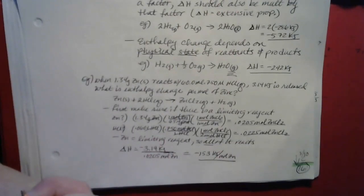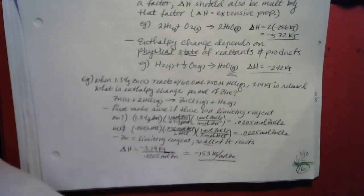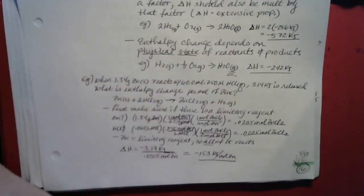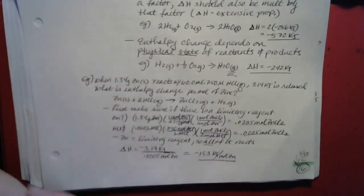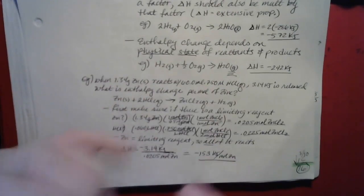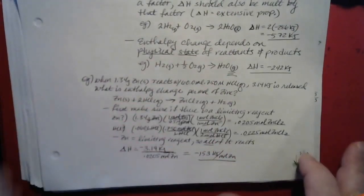The only time when enthalpy would not be the same as heat flow is in a case like a bomb calorimeter, where you're generating gases and you're confining the gases to a certain volume so that the pressure builds up inside.